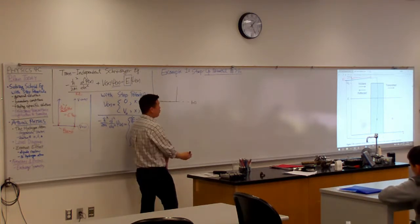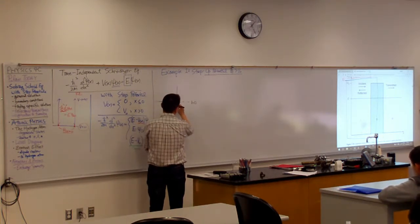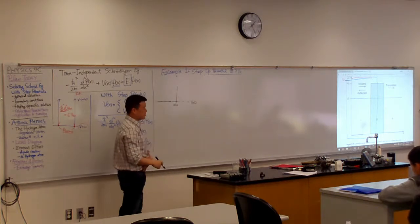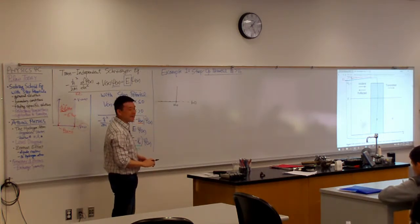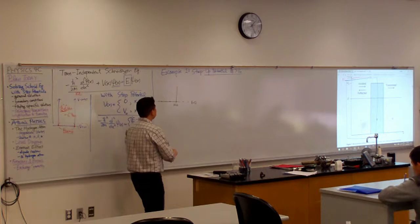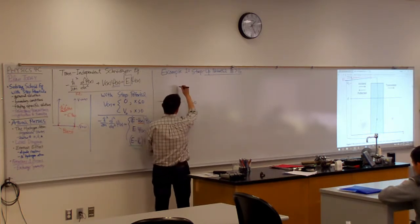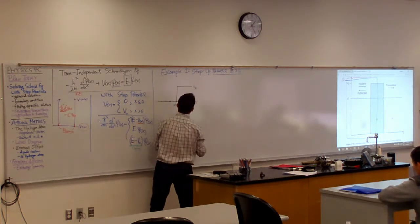And I'm just going to define my coordinate system so that this is x equals zero. You will soon see that this actually does make my life a little bit easier. And so this is my potential size, v naught.